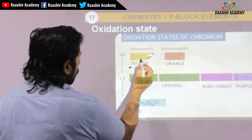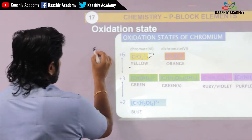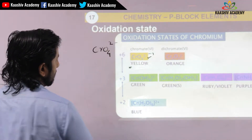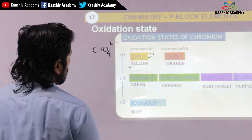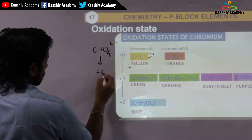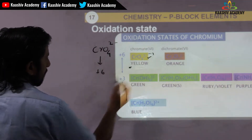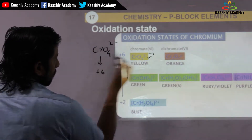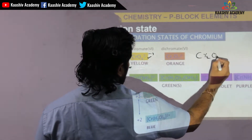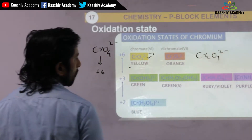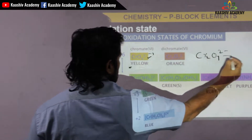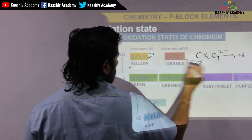CrO4 2 minus has oxidation state plus 6 and is yellow in color. Cr2O7 2 minus has oxidation state plus 6 and is orange in color.